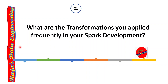What are the transformations you apply frequently in Spark development? Commonly used transformations include filter, orderBy, adding a new column using withColumn, renaming a column using withColumnRenamed, joining two different datasets, applying window functions, aggregate functions, and adding a unique key using monotonically_increasing_id. You should mention whatever transformations you have applied practically in your project.